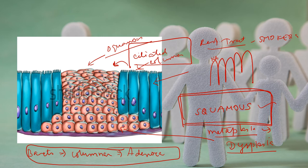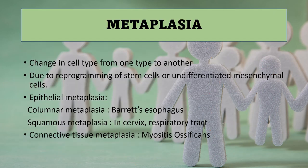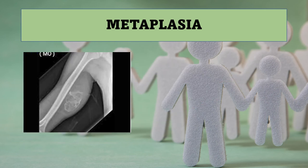Other examples of squamous metaplasia include the cervix and the pancreatic duct - if there is obstruction to the pancreatic duct, the ductal epithelium can undergo squamous change. The same can happen in the urinary tract. These are all examples of squamous metaplasia, whereas Barrett's esophagus is an example of columnar metaplasia. All of these happen in epithelium. Metaplasia occurs due to reprogramming of stem cells or undifferentiated mesenchymal cells.